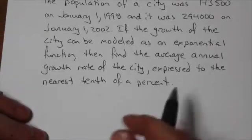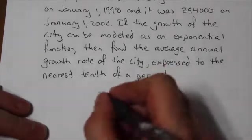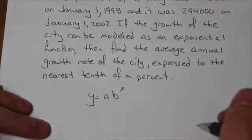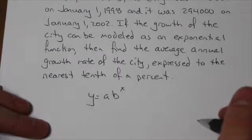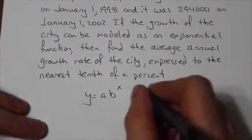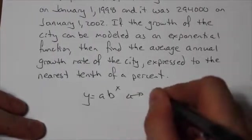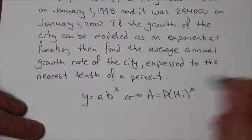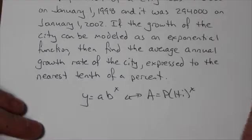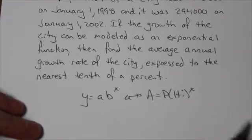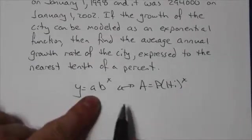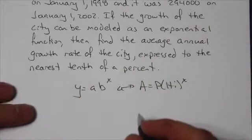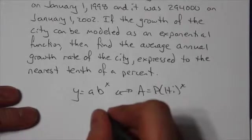So how does this work? As an exponential function, we would model it like y = ab^x. Now based on the model we've used, if we compare this to the compound interest equation, which is a great model to use by the way, what we'll see is that A would be in the same place as P, and that will be the initial population here, which we see is 173,500.